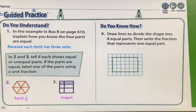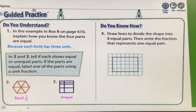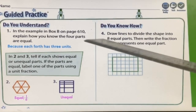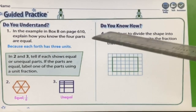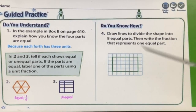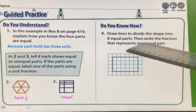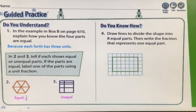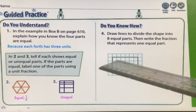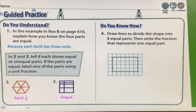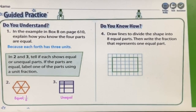Question four: draw lines to divide the shape into eight equal parts, then write the fraction that represents one part. From reading the problem, you know there are eight equal parts, so the denominator is eight. You represent one part, so the numerator is one. Draw the lines in the box, dividing it into eight equal parts. You know the parts are equal by counting the squares — each part should have the same number of squares.